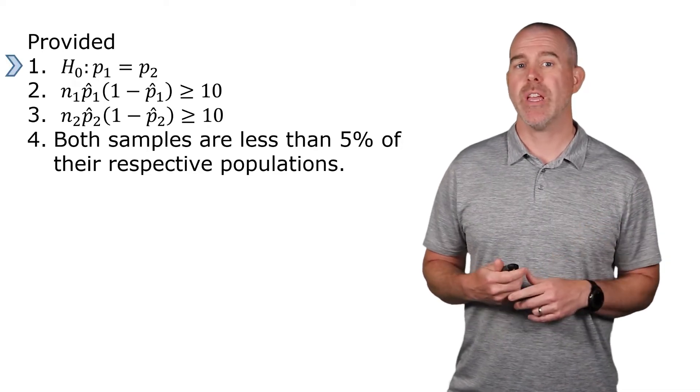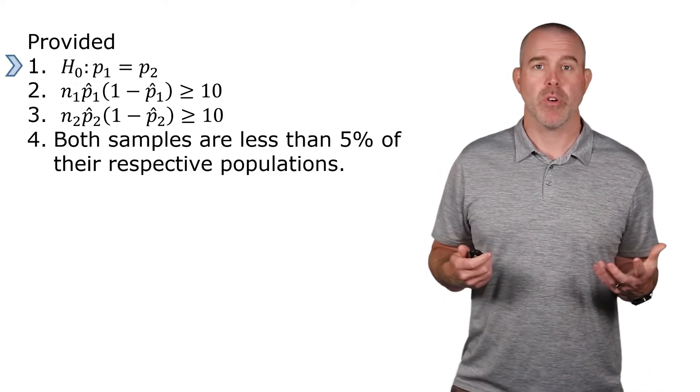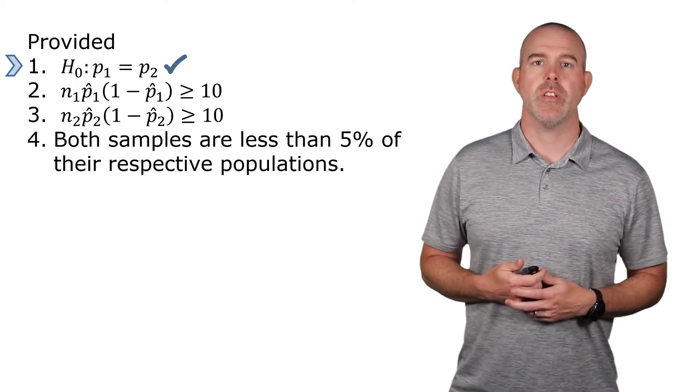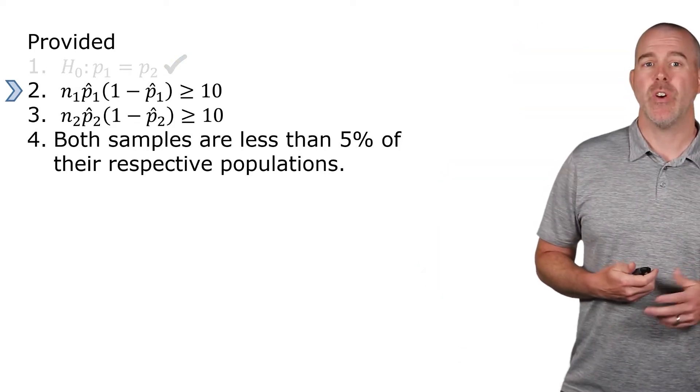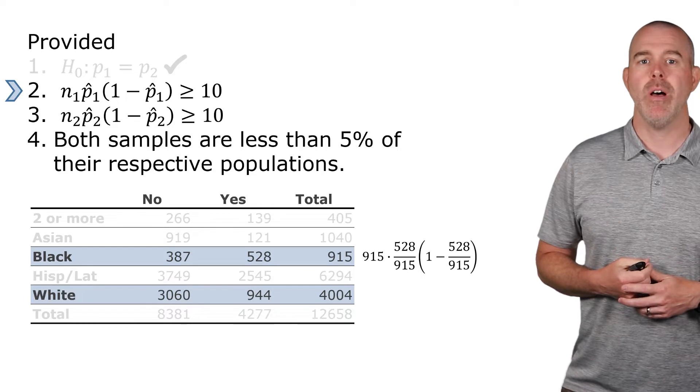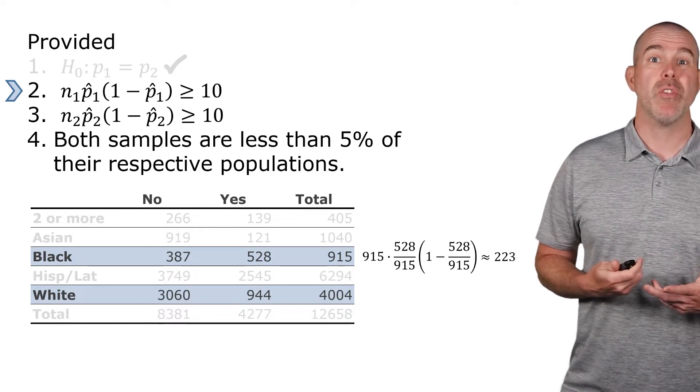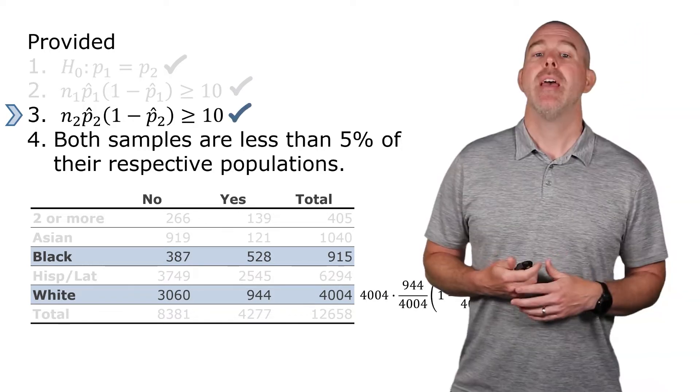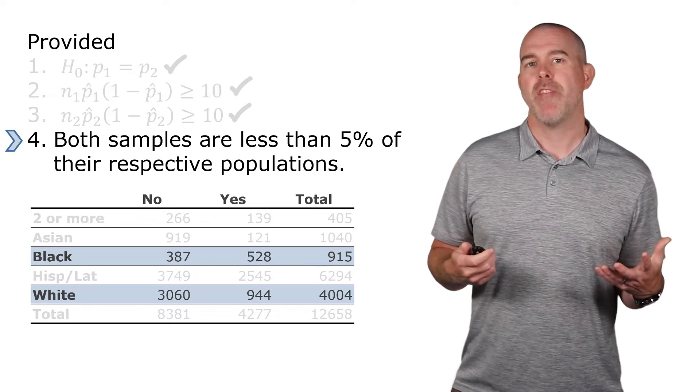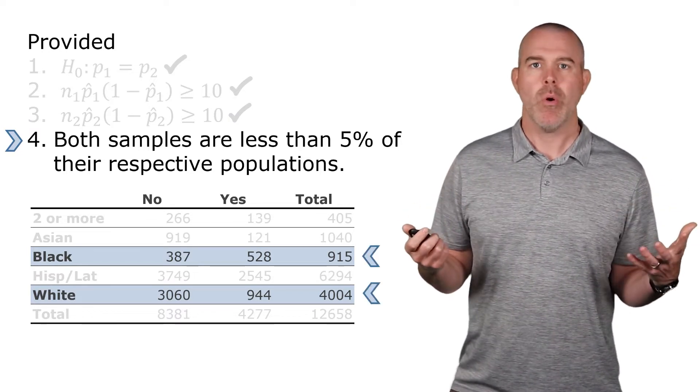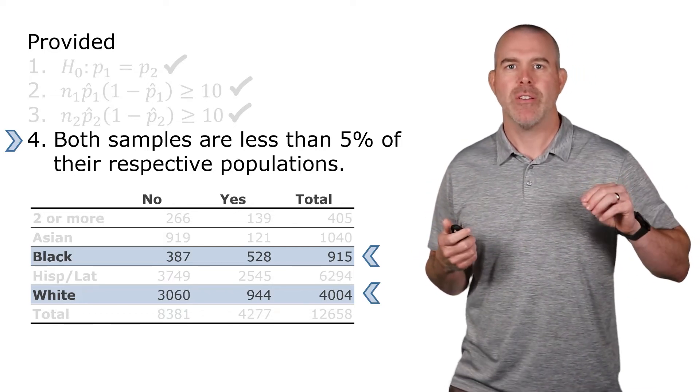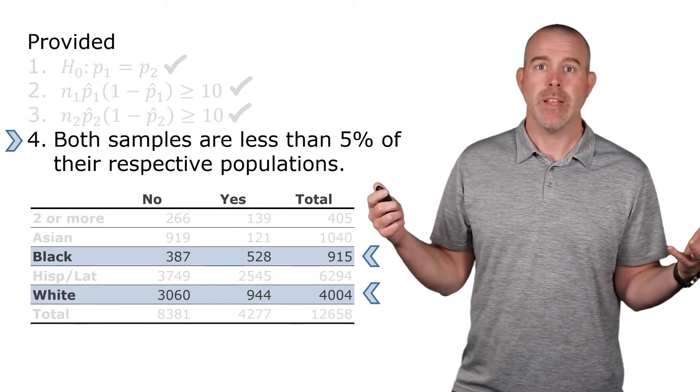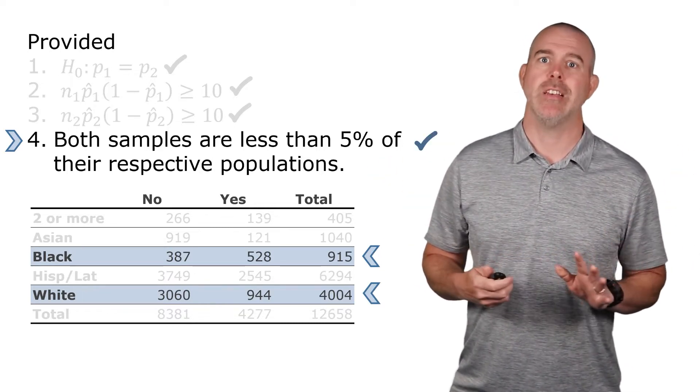Let's check these conditions. We have these four conditions. First, our null hypothesis is that the proportions are the same. Yeah, we're going to assume that they have the same discipline rates and we're going to see do black students, is their discipline rate higher? This first check, we can use the n and the p1 from the sample and we get 223. So that is definitely at least 10. Similarly, for white students, you can check that definitely at least 10. And then we're looking at are these samples less than 5% of their respective populations, the 915 and the 4004 are certainly less than 5% of all black students and all white students. So yes, that condition is met.